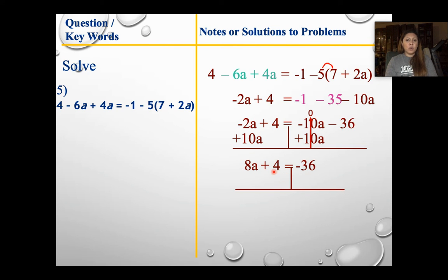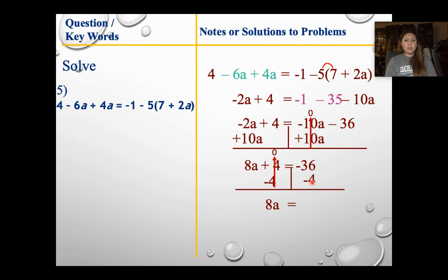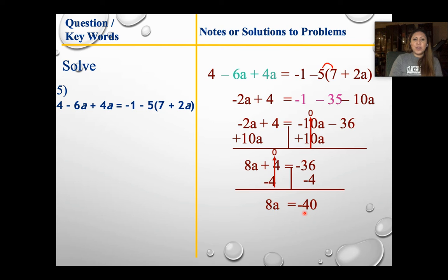From here, just like normal, I have a positive 4, so I subtract 4 from both sides. Bring down 8a. I have same signs — negative 36 plus negative 4. That's a negative 40. Then we're going to divide both by 8, and I get a equals negative 5. So that would be my answer.